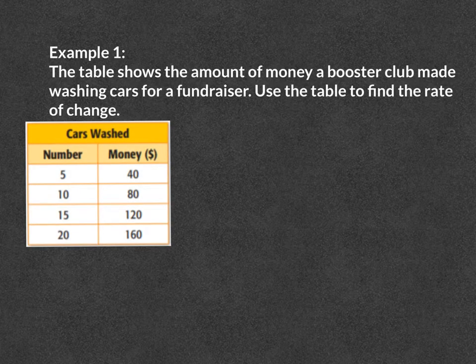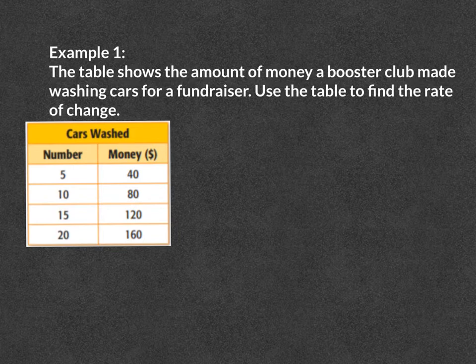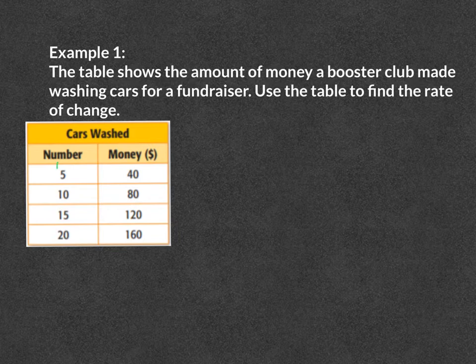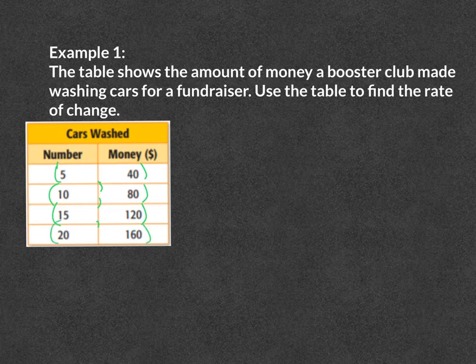Example number 1. The table shows the amount of money a booster club made washing cars for a fundraiser. Use the table to find the rate of change. I need to find the change in y over the change in x. I need to subtract the y values to find the change, then subtract the x values to find the change. I am going to write my answer as a fraction with y as a numerator and x as a denominator. I will insert parentheses and a comma to make ordered pairs. The left column are all my x values and the right column are all my y values.